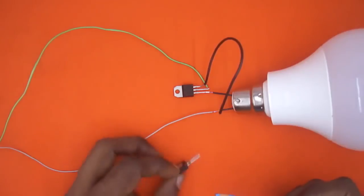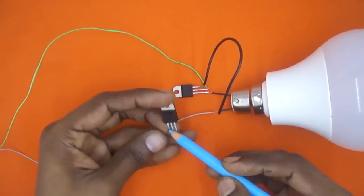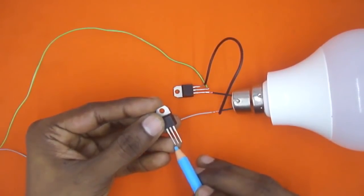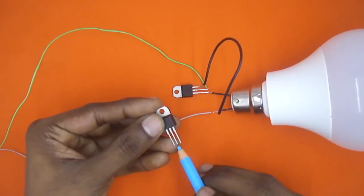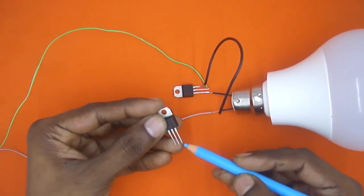So here I have one small TRIAC with three pins. Out of these three pins, the first pin is called T1 (terminal 1), the second pin is called T2 (terminal 2), and the third pin is called the gate.